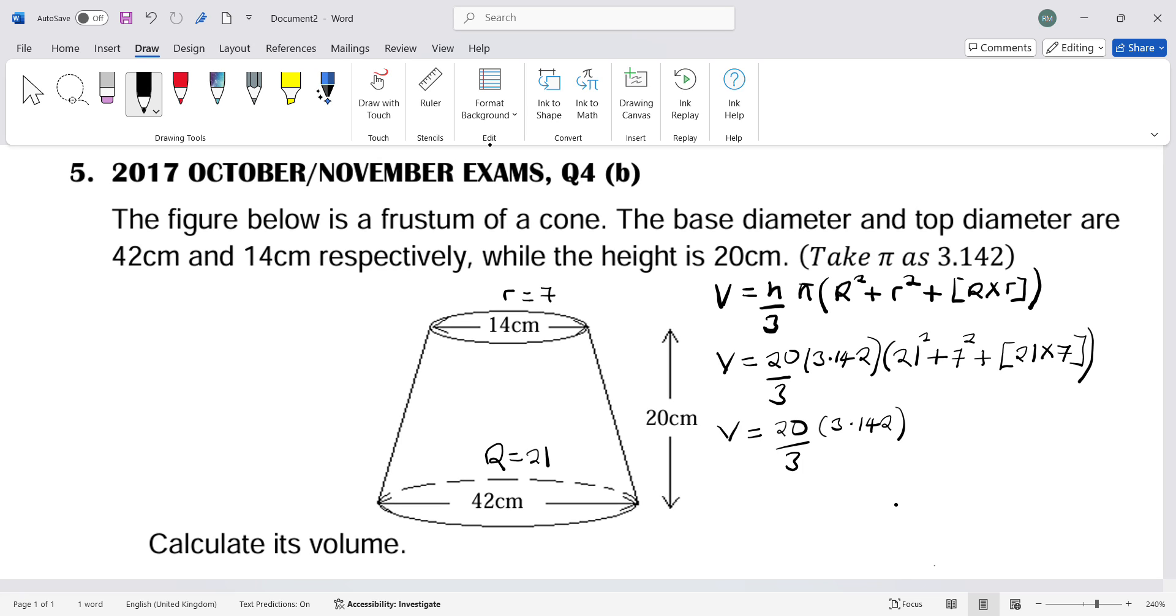21 squared is 441... let me recalculate: 490. Plus 7 squared is 49, plus 21 times 7, which is 147. Now working out the numerator: 20 times 3.142 times these values gives me 40029.08, divided by 3.